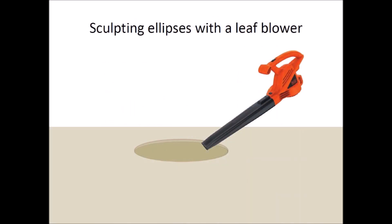Once I saw a video where a guy used a leaf blower to make an indentation on a sandy surface and suggested that airbursts could have formed the Carolina Bays. It is not a bad idea, except for the fact that airbursts that can dig holes with diameters of many kilometers are not observed in nature. Tornadoes, which are the most powerful windstorms, are not known to dig elliptical structures like the Carolina Bays.